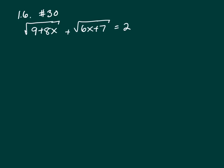The first thing you need to do is isolate one of the radicals. It does not matter which one. And that means get it on one side by itself. So I'm going to do 9 plus 8x equals 2 minus square root of 6x plus 7.